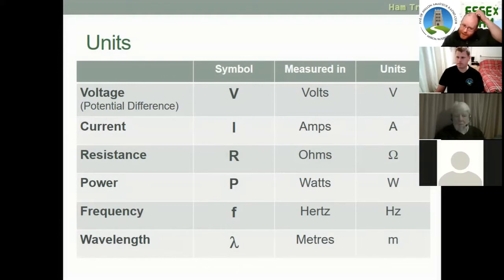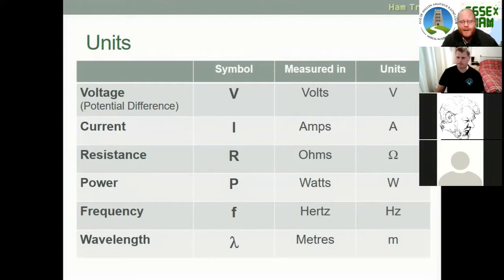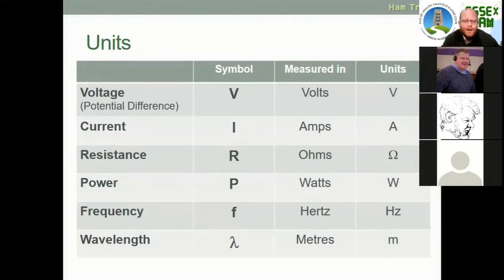Power is a capital P, measured in watts, with unit symbol capital W. Frequency uses a lowercase f, measured in hertz, with unit symbol Hz — capital H with a lowercase z. The mathematical symbol for wavelength is the Greek letter lambda. Wavelength is measured in meters and the unit symbol is a lowercase m.